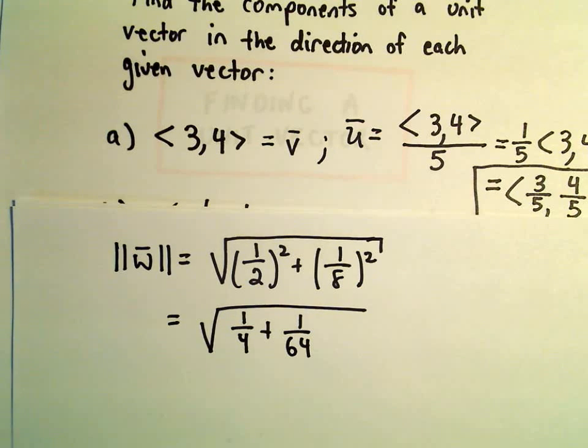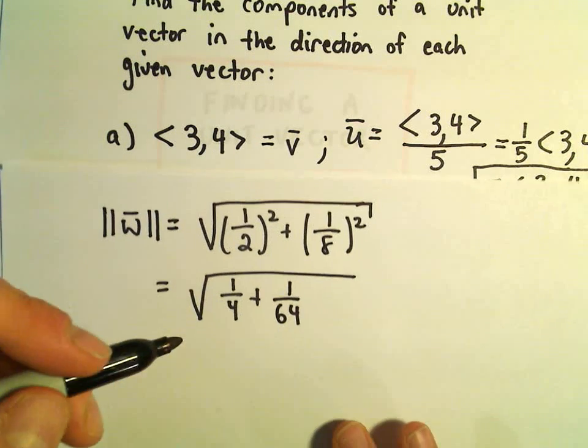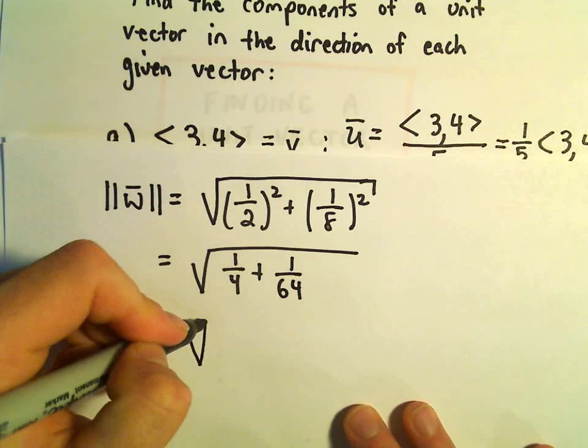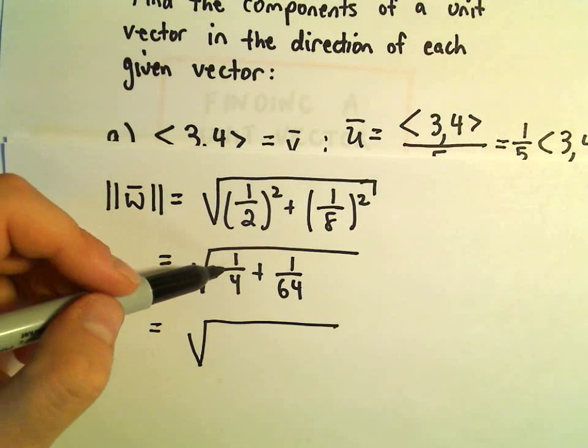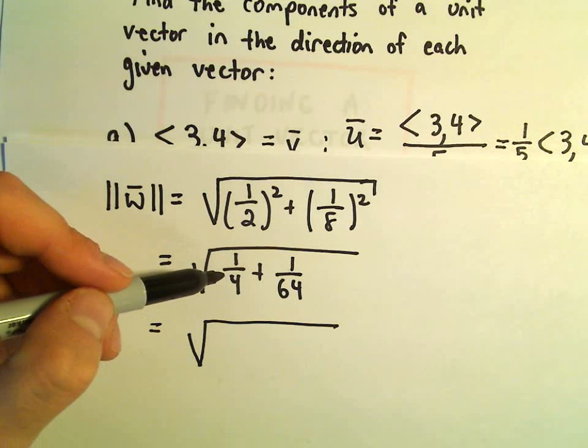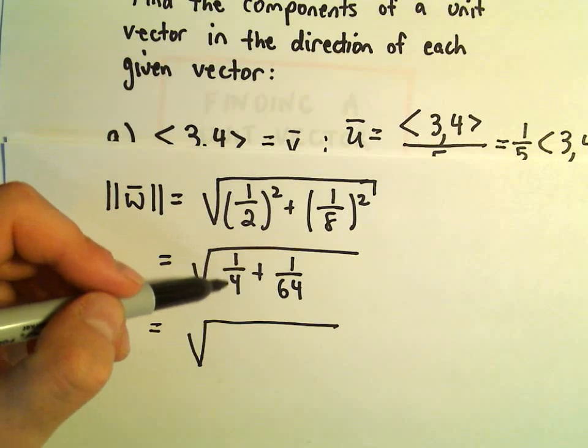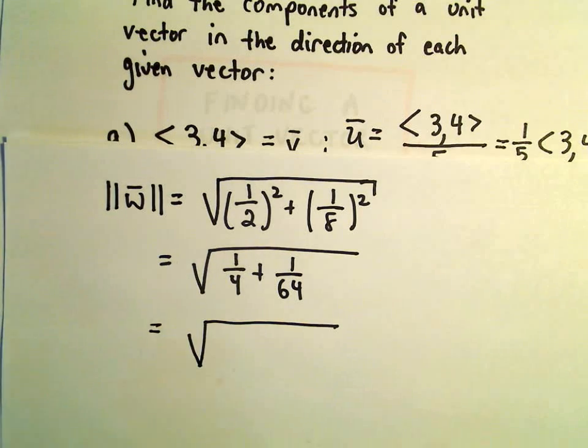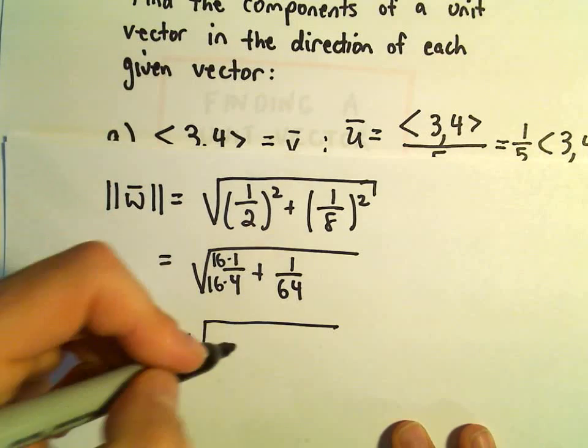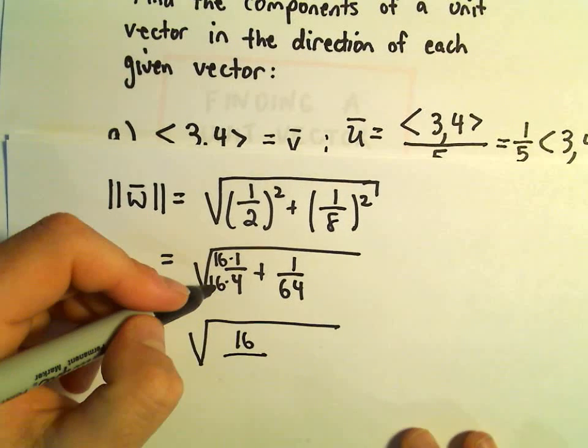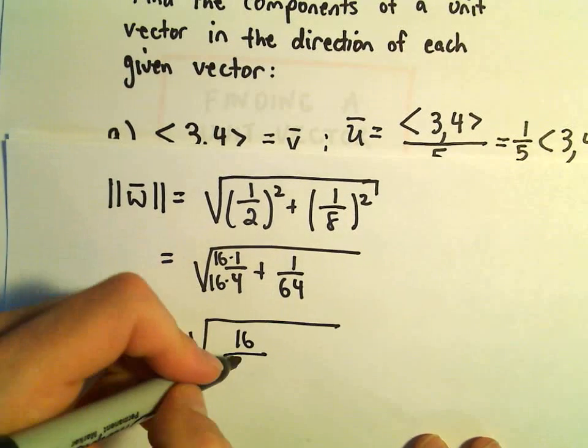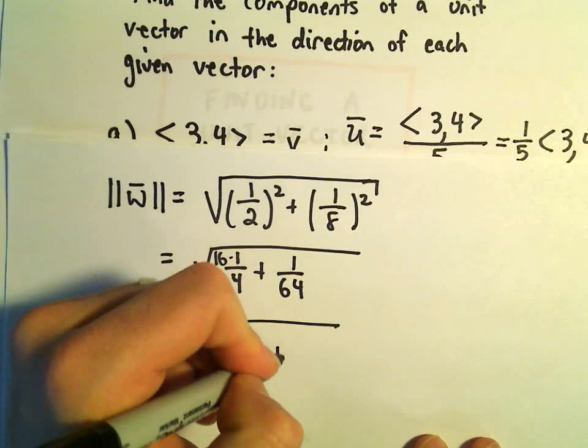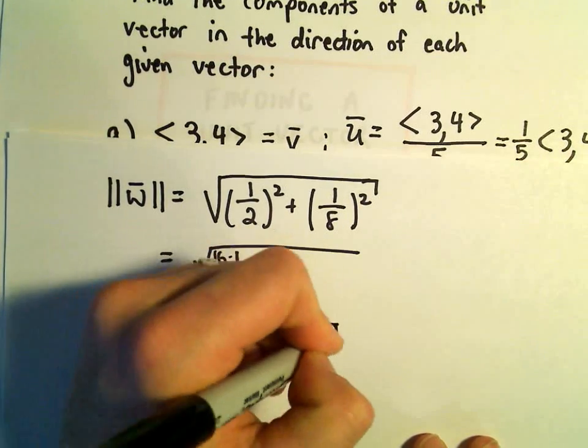Well, we could always clean this up a little bit by getting common denominators. Let's see, I guess we would have to multiply top and bottom of our first fraction by, it looks like to me, like by 16. So, if we multiply by 16 and by 16, we'll have 16 on top. Again, 16 times 4 is going to give us 64 plus 1 over 64.